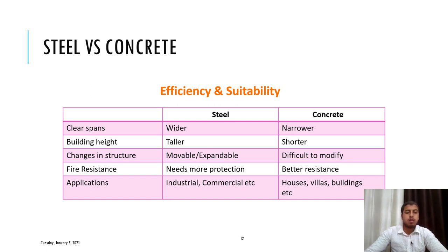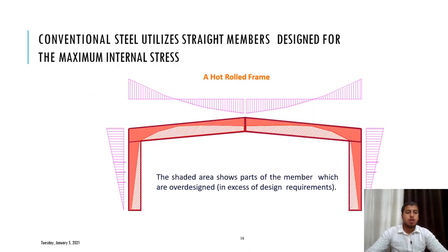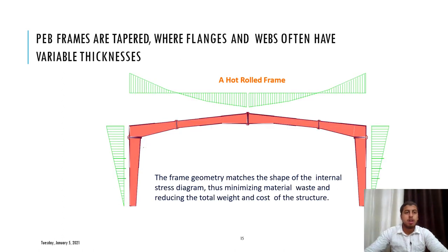Now let's compare PEB with conventional steel buildings. Why PEB? Where there is more load coming, we can have a thicker section there. But as it progresses to the middle section where bending moments are less, the sections are made thinner — meaning we can save a lot of steel, making it more economical. Conventional steel uses standard members designed for maximum internal stresses, which is not always necessary. As shown in this figure, the shaded area shows parts of the member which are over-designed. For PEB frames, variable thickness satisfies the stress variation, and the frame geometry matches the shape of the internal stress diagram, thus minimizing material waste and reducing the cost of the structure.